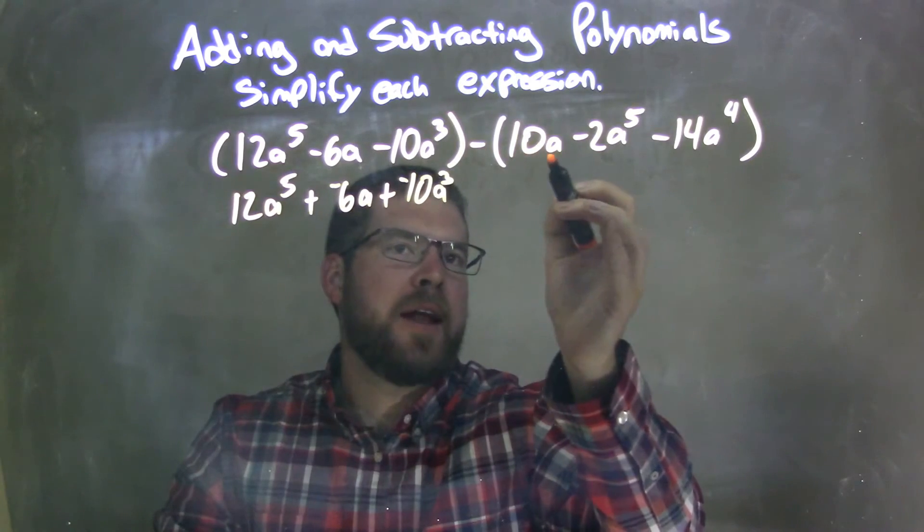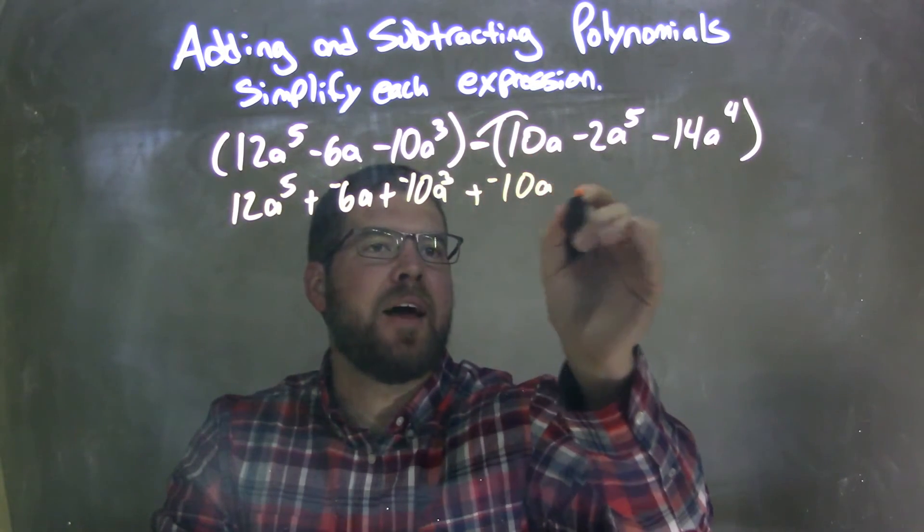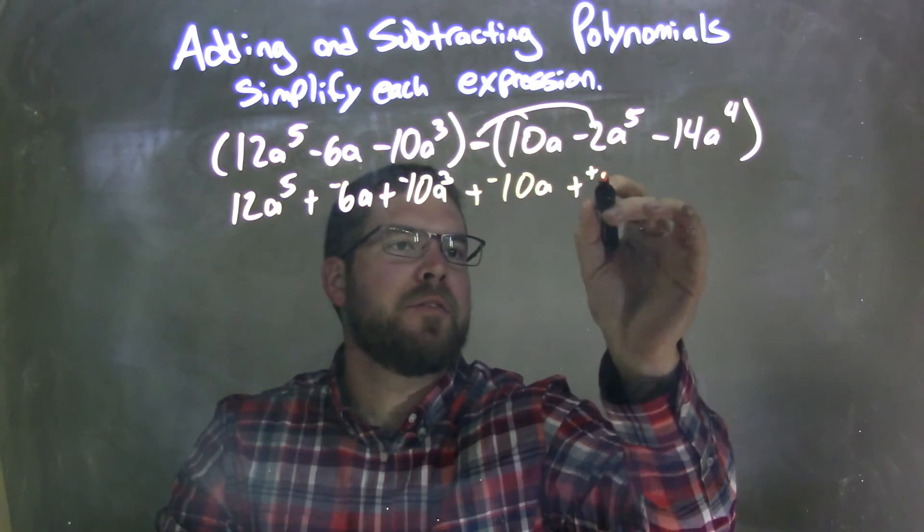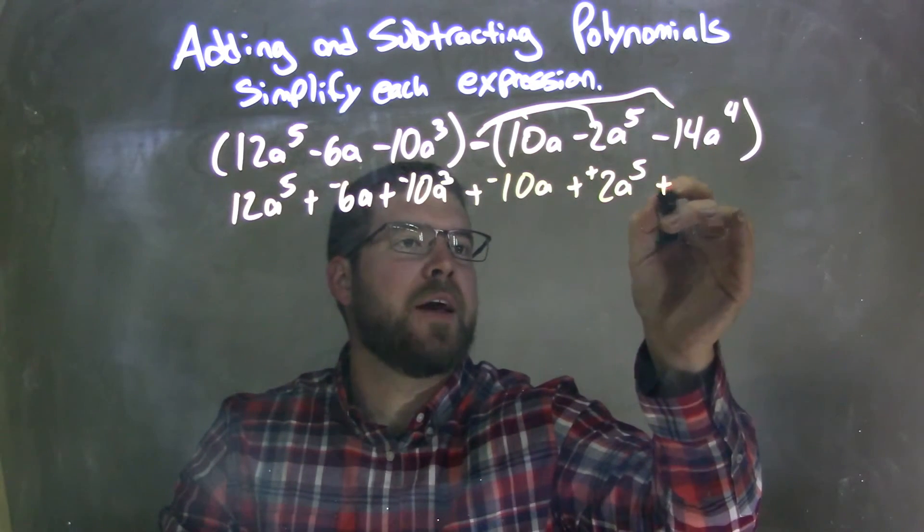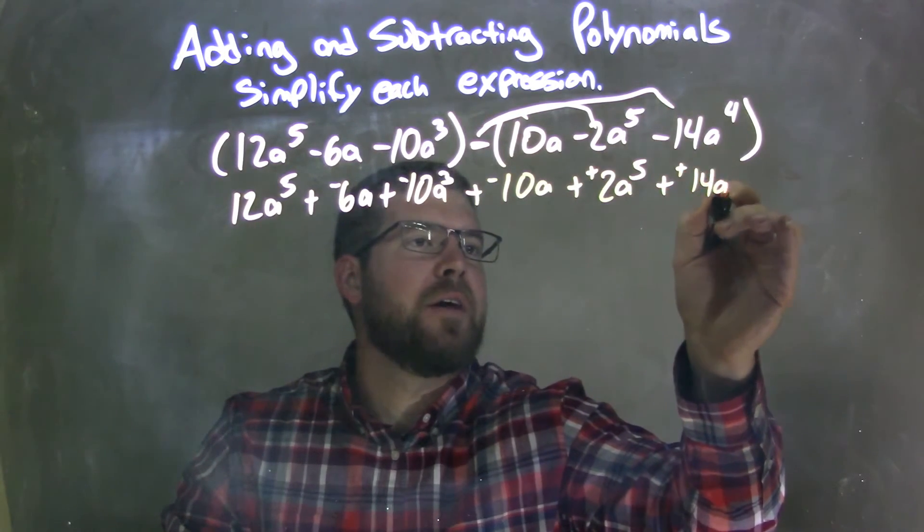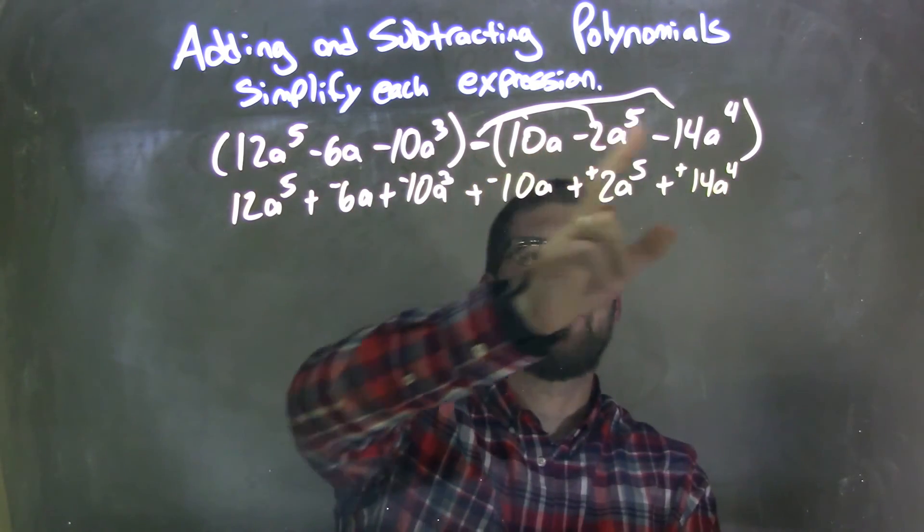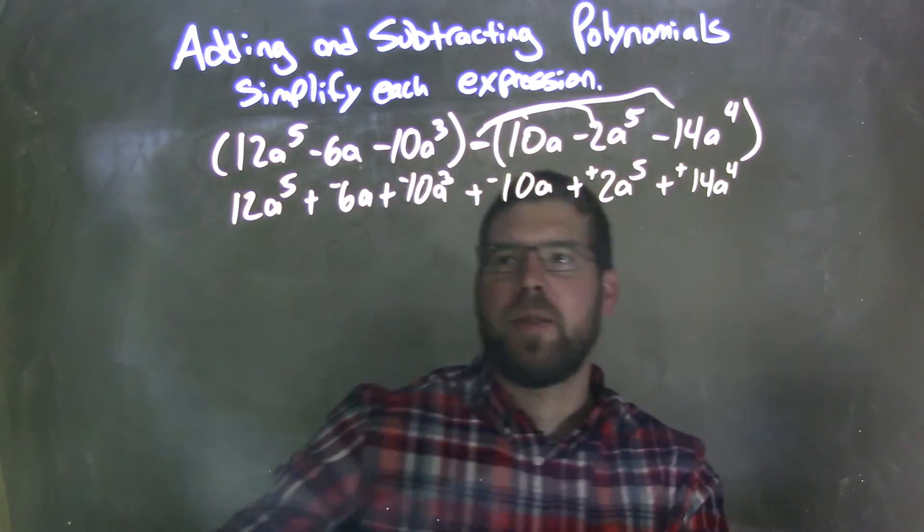Then I'm distributing the subtraction sign across, so we have plus a negative 10a. Then this one here, distribute across, plus a positive—negative, negative, positive—2a to the 5th. And distribute the last one here, plus a positive 14a to the 4th. That's probably the most common mistake I see from students: they don't distribute that subtraction all the way across, they just do it to the first term. It needs to be to all parts because they're in that parentheses.